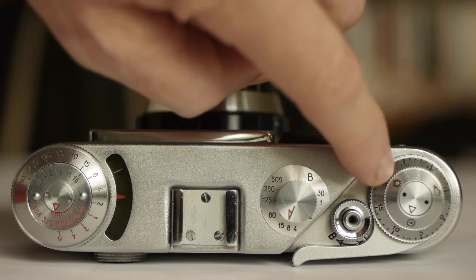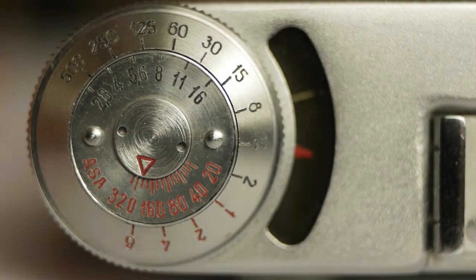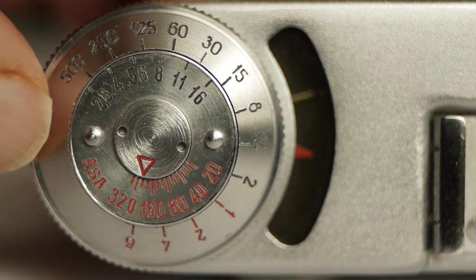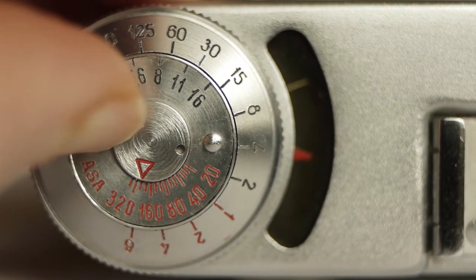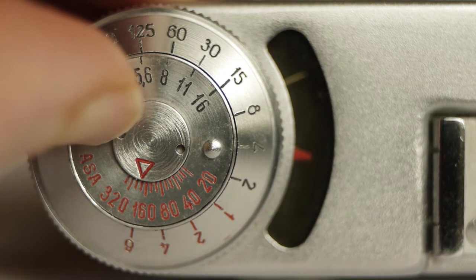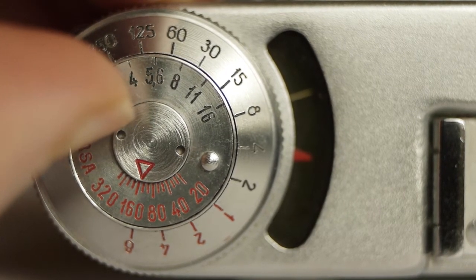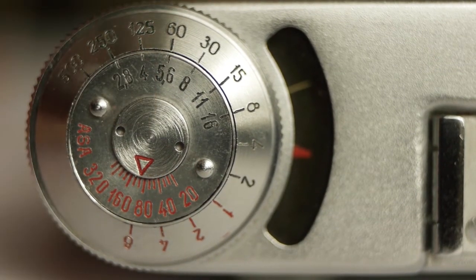Let's have a look at how to use the light meter. First of all, we're going to need to set the film speed, and we do that by turning this dial here. It's a little bit stiff on this one. Let's set it for around about 100 ISO.